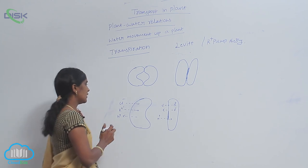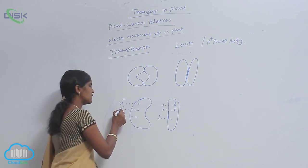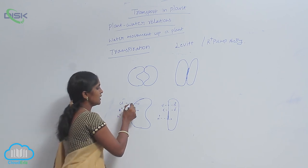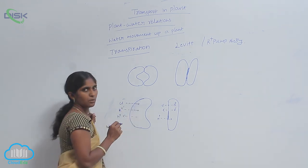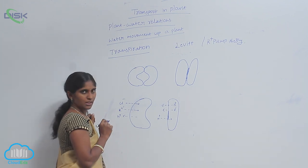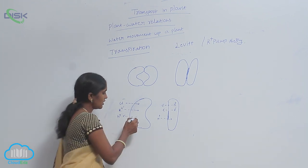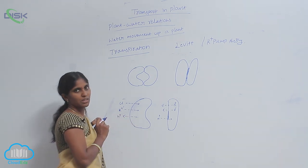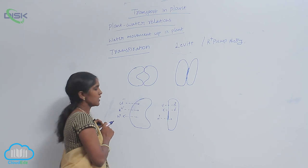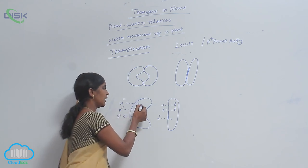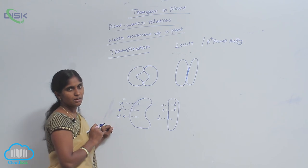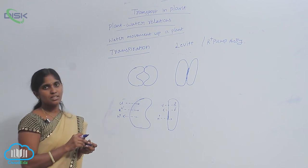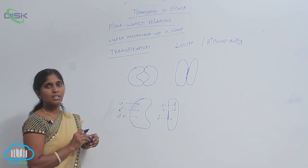Along with that K plus ions concentration, the influx of Cl minus ions also is carried out towards the subsidiary cells. You see here, by the accumulation of K plus and Cl minus ions, the water potential is decreased in the guard cells.